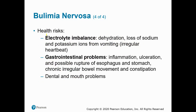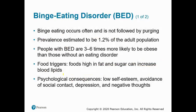Health risks associated with bulimia nervosa include electrolyte imbalances and dehydration — particularly loss of sodium and potassium — which can lead to heart arrhythmias. Gastrointestinal issues are another major risk: inflammation, ulceration, and possible rupture of the esophagus and/or stomach, as well as chronic irregular bowel movements and constipation. Dental issues and other oral health problems are also seen.